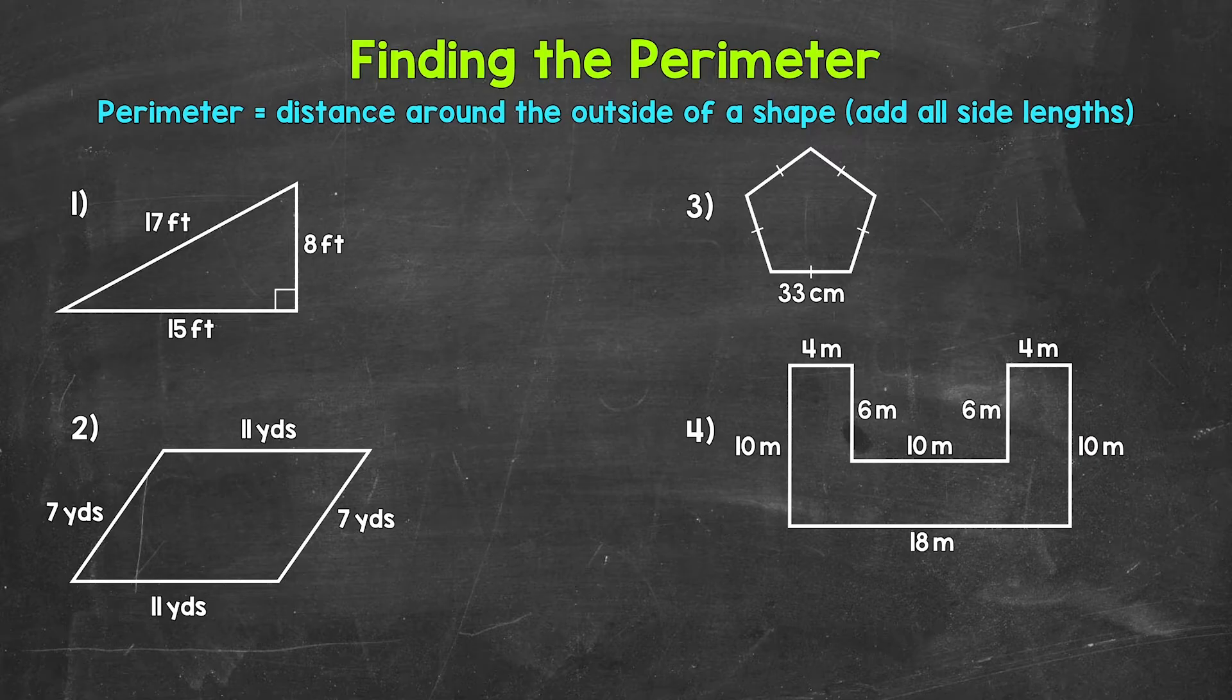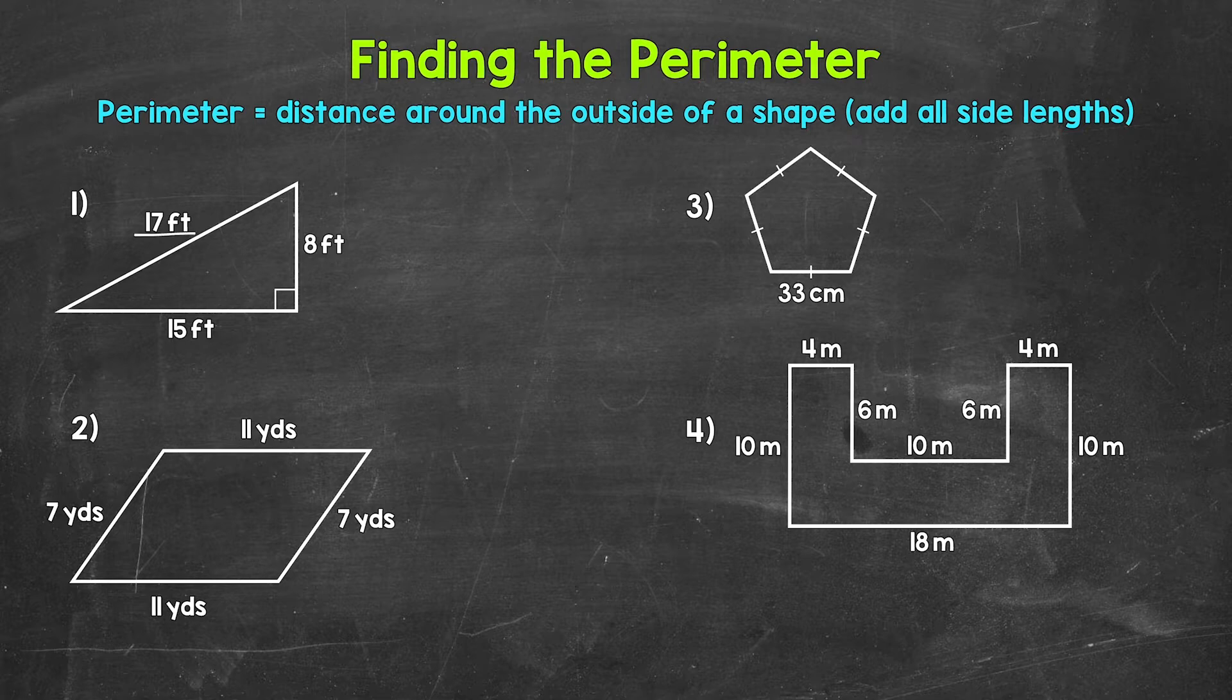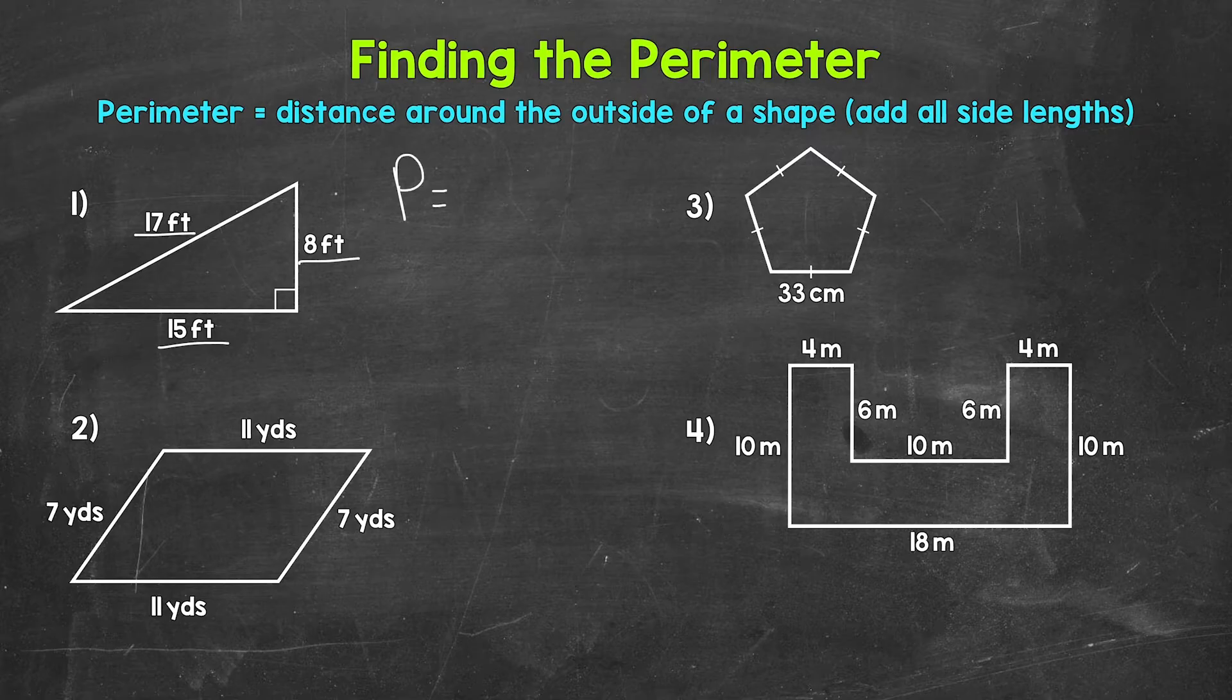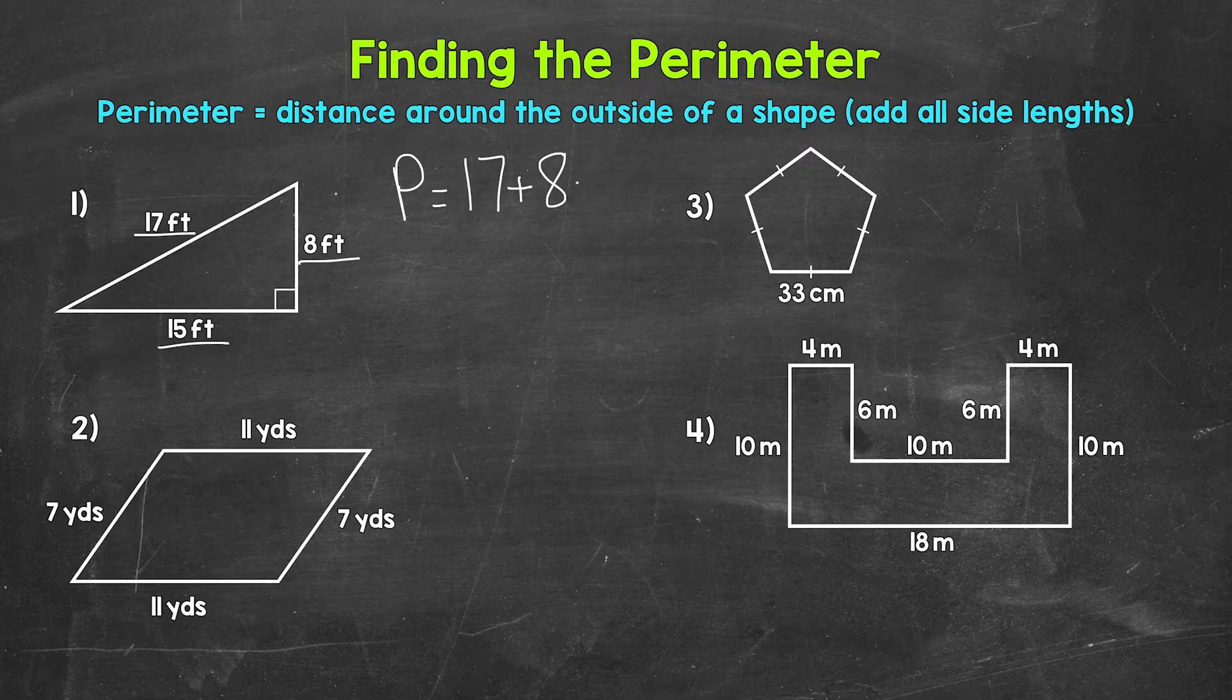Let's jump into number one, where we have a right triangle. So let's find the perimeter, the distance around the outside. We do this by adding all of these side lengths. So 17 feet plus 8 feet plus 15 feet. So for the perimeter, we have 17 feet plus 8 feet plus 15 feet.